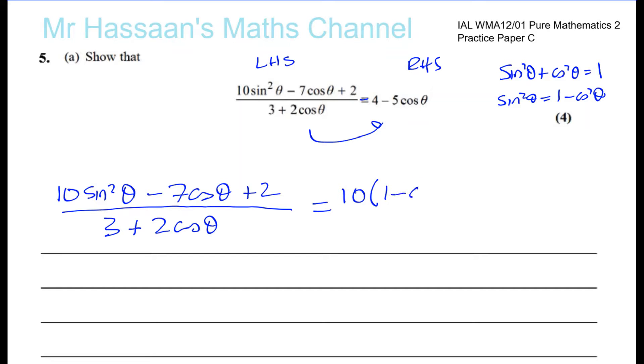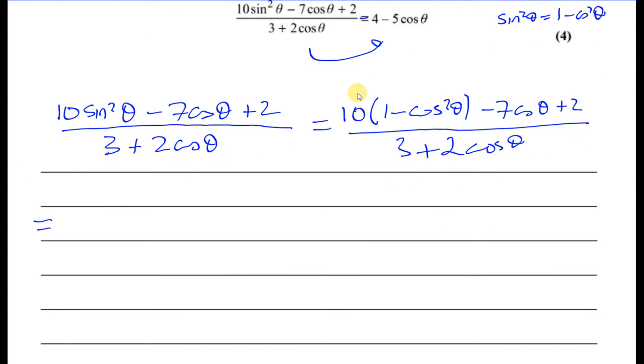So we're going to have 10 times 1 - cos²θ minus 7cosθ + 2 over 3 + 2cosθ. Try and be as neat as possible. Now let's carry on. That can expand, you have 10 minus 10cos²θ minus 7cosθ plus 2 over 3 + 2cosθ.